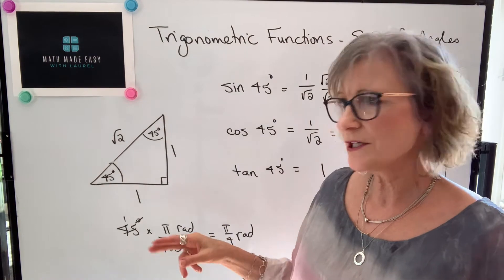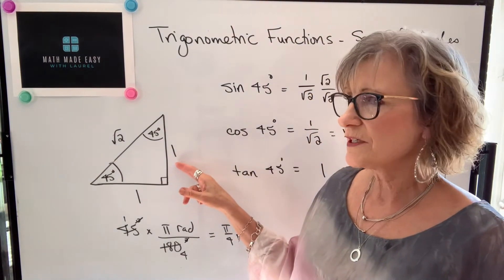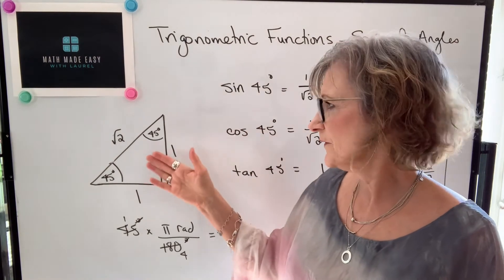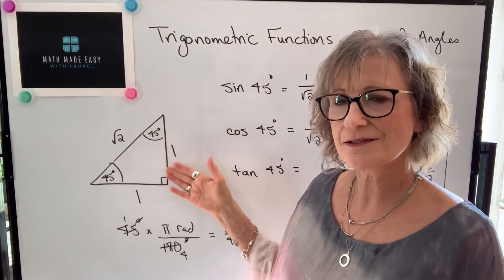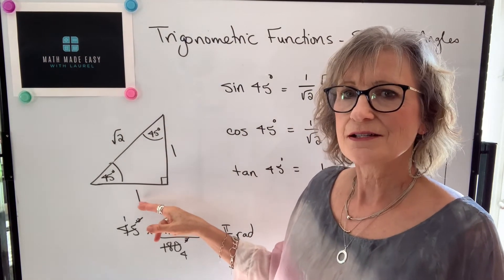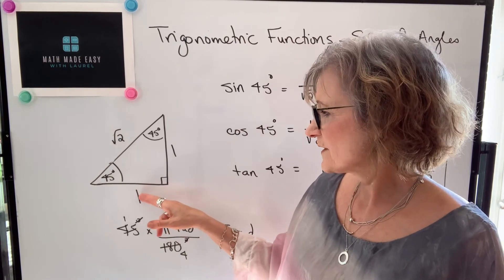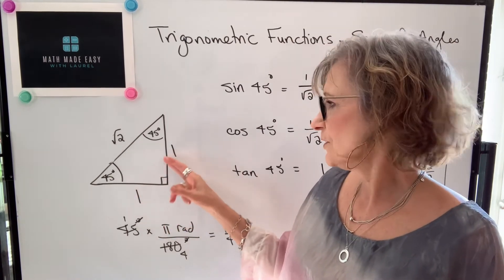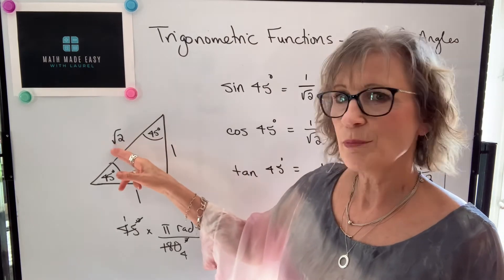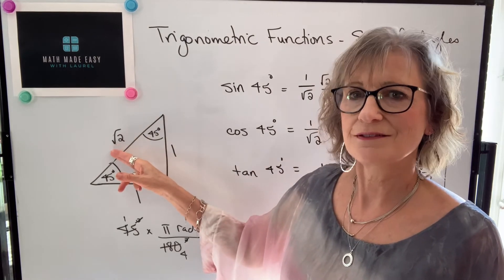Knowing this relationship is useful not just for finding the trig functions, but for finding the lengths of sides in the triangle if you only know one side. For example, if you knew this side was 10 units, then this side is also 10 units, and the hypotenuse will be root two times 10 units.